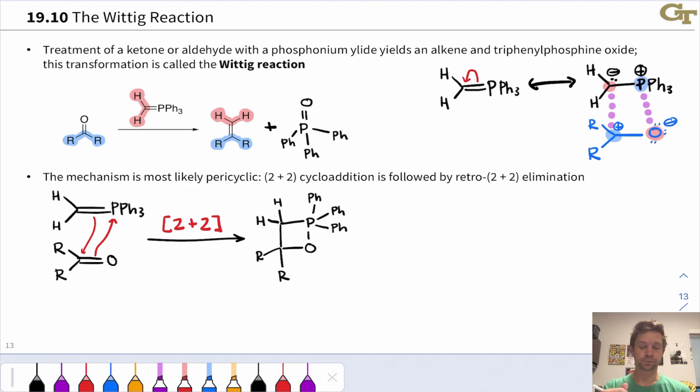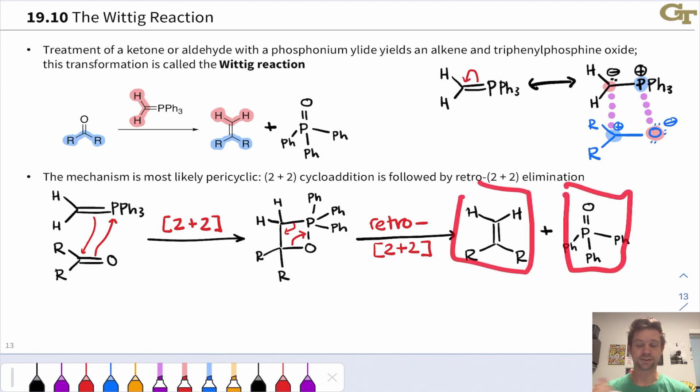To get to the final products, we'll notice that the alkene atoms are over here on the left and the atoms of triphenylphosphine oxide are here on the right. And so what needs to happen here is a retro [2+2] reaction. This releases the alkene product as well as the triphenylphosphine oxide. This is a pretty typical mechanism of the Wittig reaction showing how essentially what has happened here is that the oxygen of the carbonyl group and the CH2 group in the ylide have changed places via a [2+2] followed by a retro [2+2].